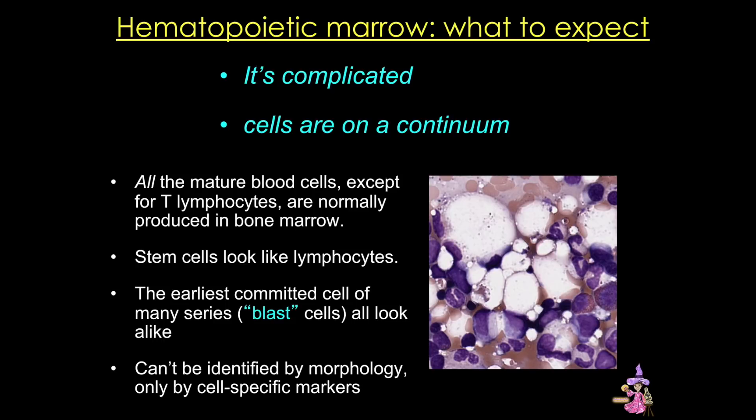Now recall that all mature blood cells except for T lymphocytes are born and mature in the bone marrow. Unfortunately most of the stem cells look a lot like lymphocytes, and even the first committed cells of many lineages — the blast cells — all look alike, at least to our eyes. This means that most cells can't be identified by morphology, only by cell-specific markers. But today I'll describe the cells of three lineages in detail and show you some ways to identify some of the stages in the bone marrow.